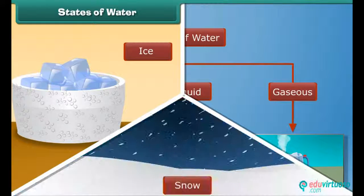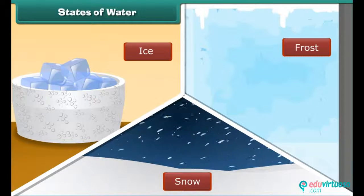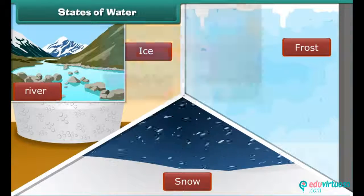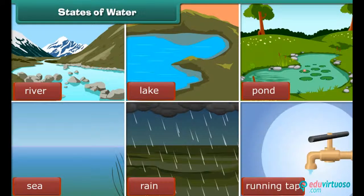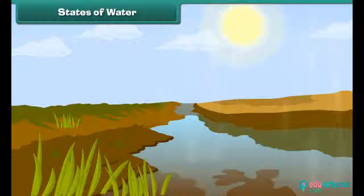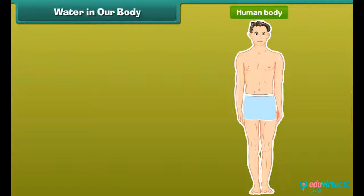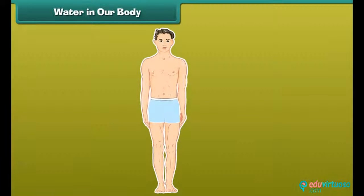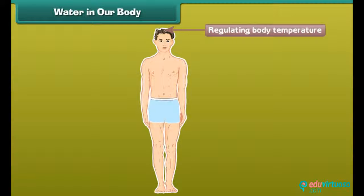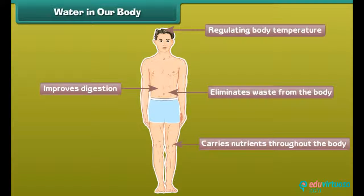Ice, snow, and frost are examples of water in the solid state. You see liquid water in rivers, lakes, ponds, sea, when it rains, and in water coming out of a tap. Water vapor is a gas in the air — you can't see it because it is invisible. Water makes up two-thirds of the human body. It plays a critical role in regulating body temperature, carries nutrients throughout the body, improves digestion, and eliminates waste from the body.